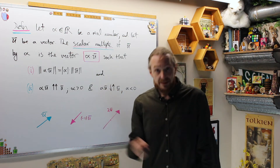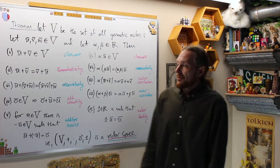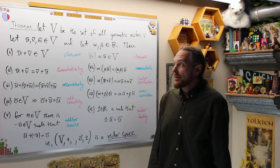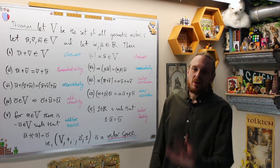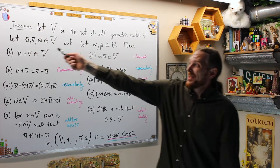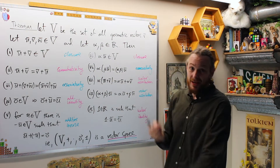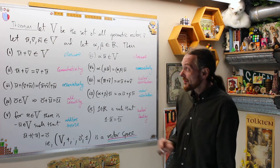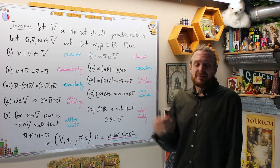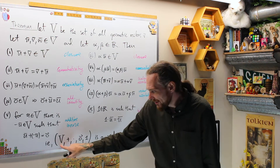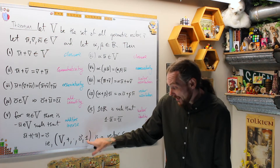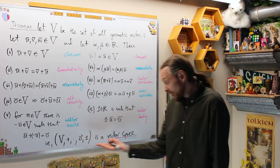Let's do the axioms of vector space for the set of all of these. With scalar multiplication and our addition operations, we can construct what we call a vector space. We consider V to be the set of all geometric vectors, then we take three arbitrary vectors in there and arbitrary numbers alpha and beta, and we have these ten properties. If these ten properties hold, that's what any object with a plus and a scalar multiplication, with an identity for addition and an identity for scalar multiplication, is called a vector space.